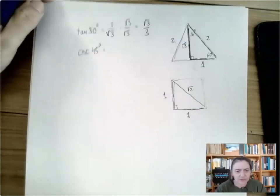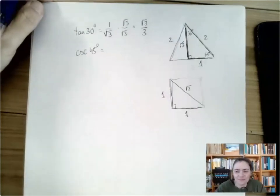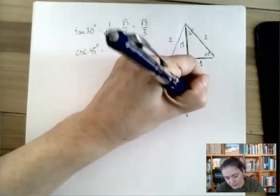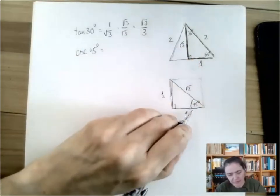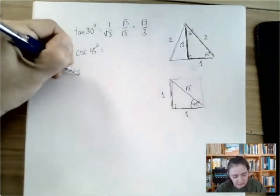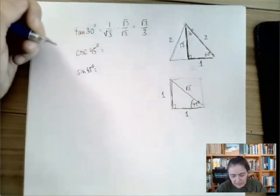And then cosecant is the reciprocal of sine. So also, this is probably the only case where we should make sure which angle we focus on. So let's say we're going to focus on this angle of 45.